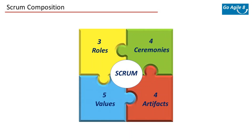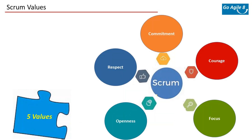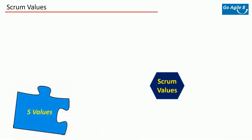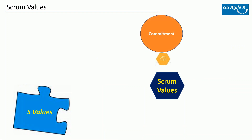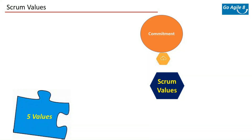The last topic is scrum values. Last time there was a typo — I mentioned four scrum values but actually it's five. The five scrum values are: commitment, courage, focus, openness, and respect. The scrum value of commitment is essential for building an agile culture. Scrum teams work together as a unit — the team trusts each other to follow through on what they say they are going to do.